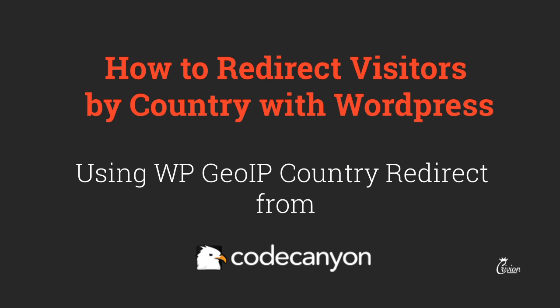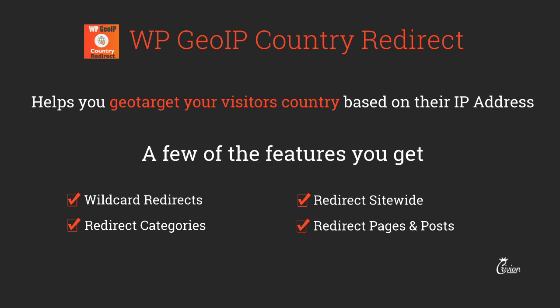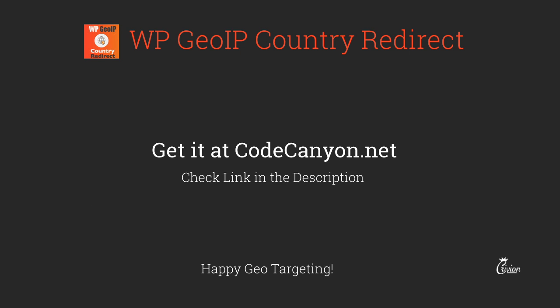Hello everyone, this is Alex and today I'm going to show you how to target your WordPress visitors by their country. We are going to use a plugin called the WordPress GeoIP Country Redirect, which helps you target your visitors by detecting their IP address and mapping it to a country. You can get your own copy at CodeCanyon.net.